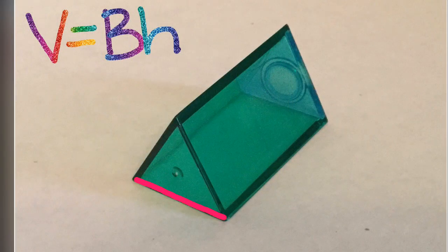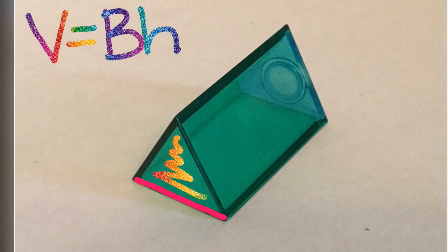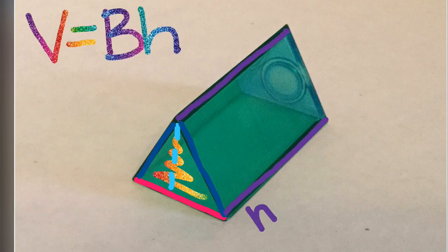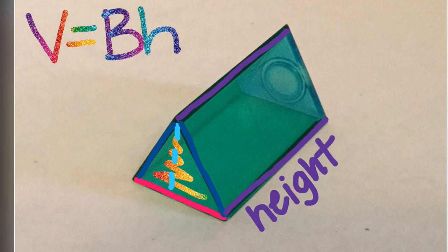Next, let's look at our triangular prism. Here's the base, and we have different measurements going on here that we have to make sure we understand. The diagonals are never the height, so if you have a triangle where both sides are diagonal, you need to look for that straight up and down line. You also need to identify the height of the shape.